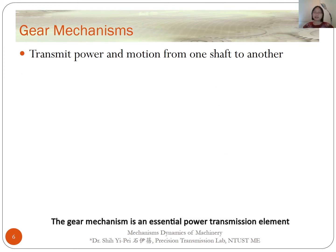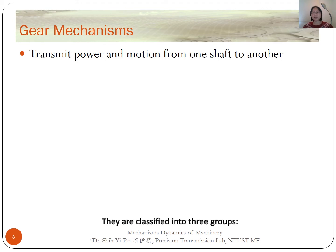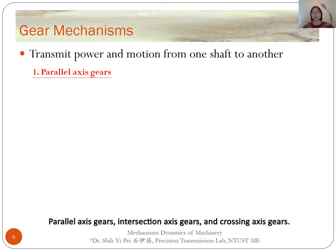The gear mechanism is an important power transmission element. They can transmit power and motion from one shaft to another. Transmission systems use many types of gear mechanisms. They are classified into three groups: parallel axis gears, intersection axis gears, and cross-axis gears.